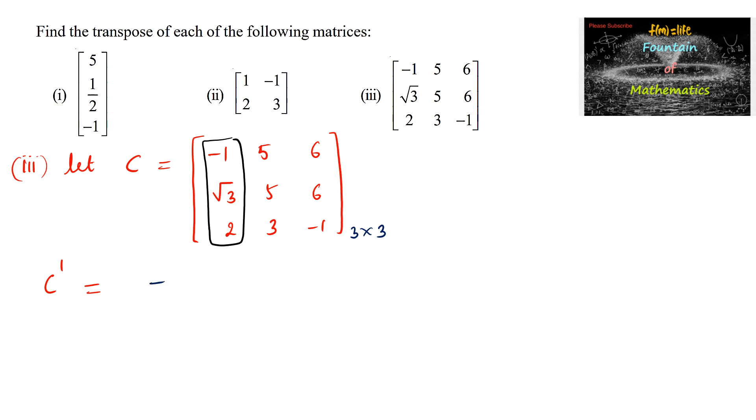So first column can be taken first row, minus 1, root 3, 2, and the second column, 5, 5, and 3 can be taken second row.